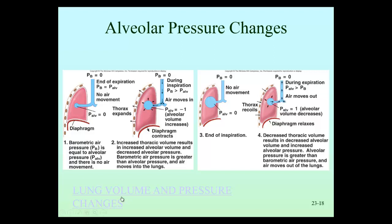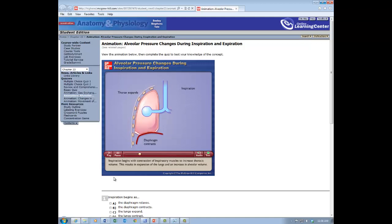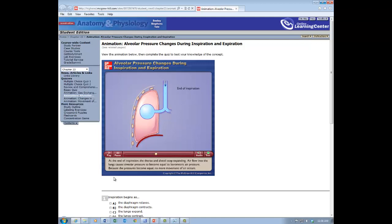Here's an animation that puts this picture in motion. At the end of expiration, barometric air pressure and alveolar air pressure are equal — therefore no movement of air occurs. Inspiration begins with contraction of inspiratory muscles to increase thoracic volume. This results in expansion of the lungs and an increase in alveolar volume. The increased alveolar volume causes a decrease in alveolar pressure below barometric air pressure, and air flows into the lungs. At the end of inspiration, the thorax and alveoli stop expanding, and air flow causes alveolar pressure to equal barometric air pressure — no more movement occurs.